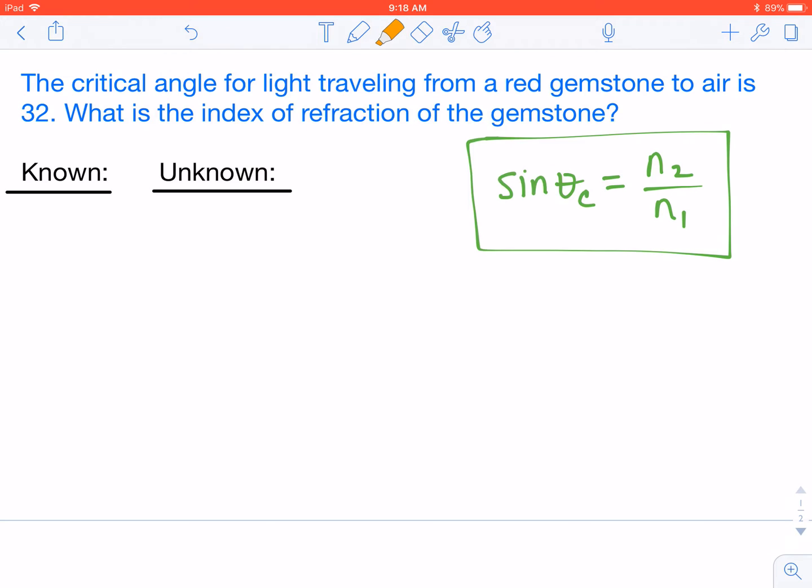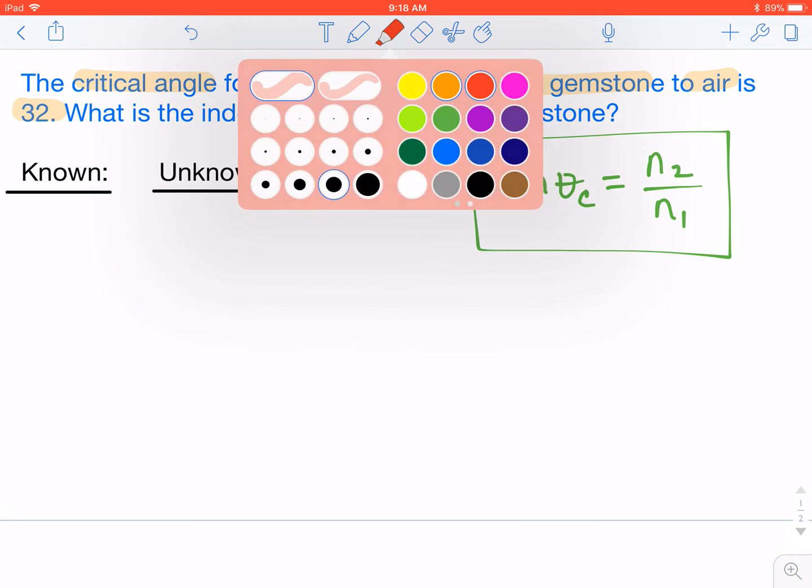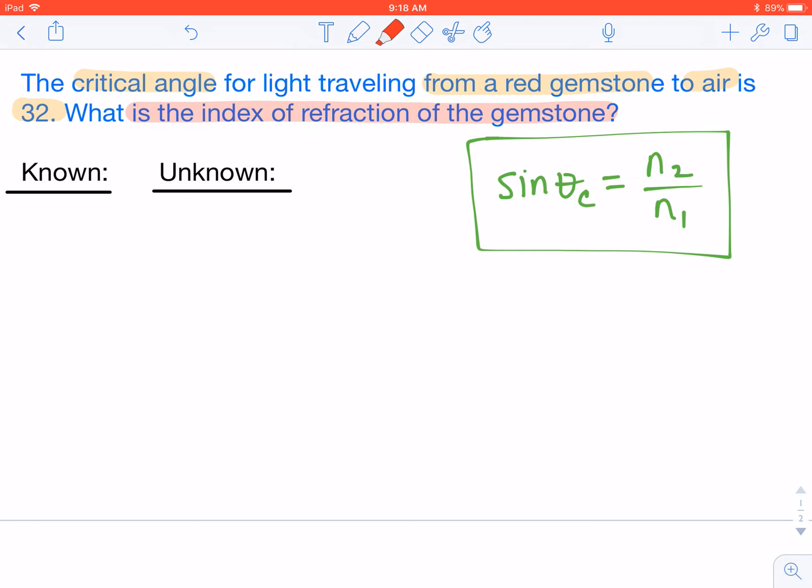In this case, they tell us that the critical angle from a red gemstone into air is 32 degrees. We know we're going from a gemstone into air, and we want to know what is the index of refraction of the gemstone.